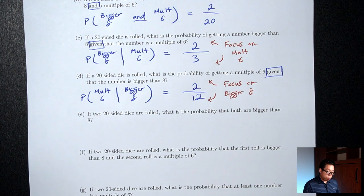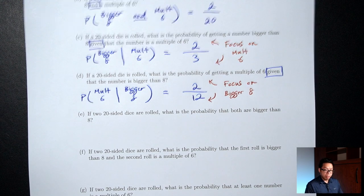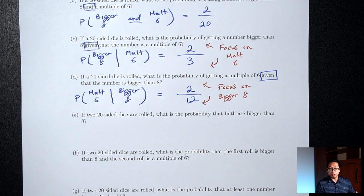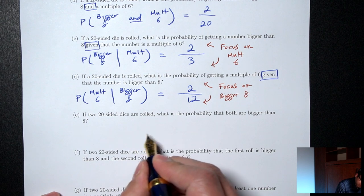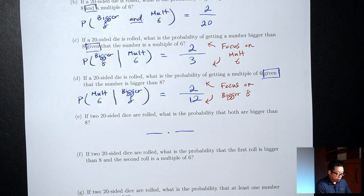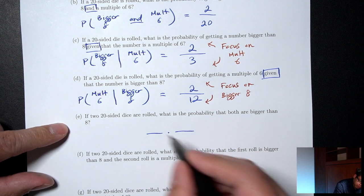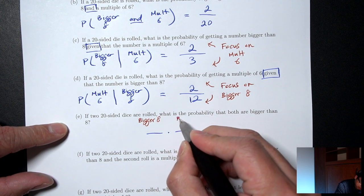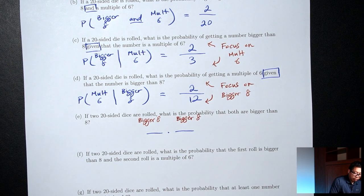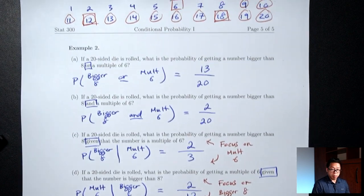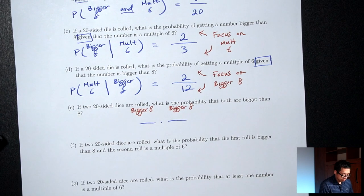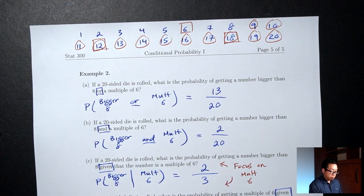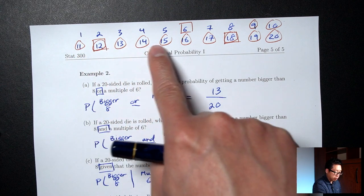Part E: if two 20-sided dice are rolled, what's the probability that both are bigger than 8? Two dice means two fractions multiplied together. First fraction: bottom is 20 total numbers, top is how many are bigger than 8 — the circles — which is 12. Second fraction: this is where dice differ from picking people. For dice, whatever happens on the first die, the second die is independent — so I still have the full 20 for the bottom.